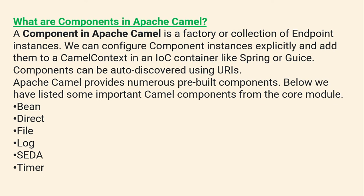Apache Camel provides numerous pre-built components. Some important Camel components from the core module include: Bean, Direct, File, Log, SEDA, and Timer.